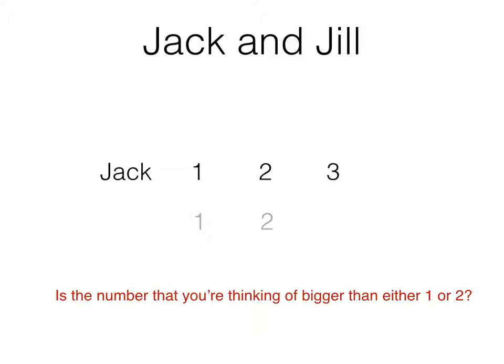Suppose the number he was thinking of was 3. He knows for sure that the number he's thinking of is bigger than both 1 and 2, so Jill knows that he would answer yes. Let's imagine that he was thinking of the number 1. He knows for sure that his number is not bigger than either 1 or 2, so Jill knows that he would answer no.